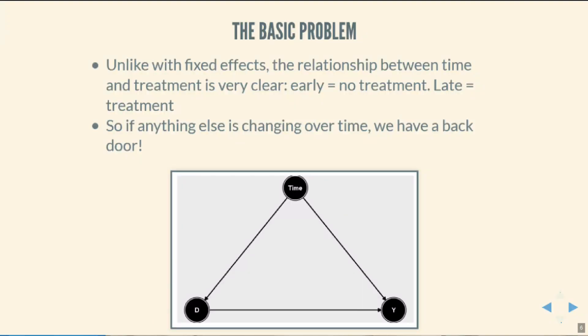There are lots of different things this back door could be depending on the context. I'm just going to group it all together and say 'time' — something changed over time that caused the outcome to change besides the policy we're interested in. Why do I have an arrow from time to the treatment itself? The treatment was enacted at a particular period of time. Before that period, there's no treatment; after it, there is. So time and treatment are changing together — there's a back door from treatment to time and then back to the outcome variable.